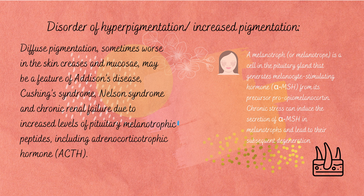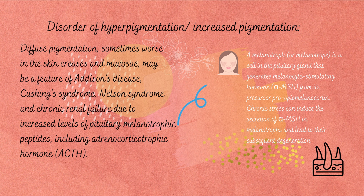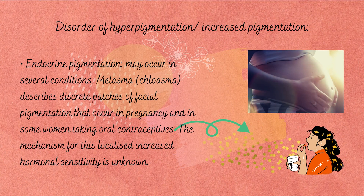A melanotroph is a cell in the pituitary gland that generates melanocyte-stimulating hormone, also known as alpha-melanocyte-stimulating hormone, from its precursor pro-opiomelanocortin. Chronic stress can induce the secretion of alpha-melanocyte-stimulating hormone in melanocytes and lead to their subsequent degeneration.